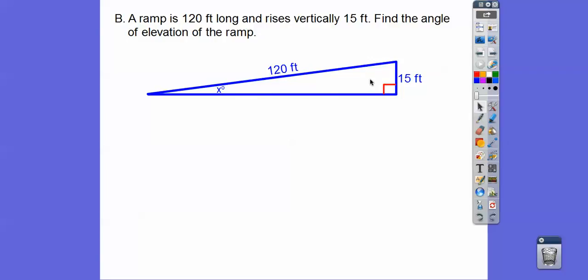So this is a sine ratio. So the sine of that, then get the decimal of that. And then here we got to do shift sine or second function sine. And so when you do that, we get about 7.2 degrees right there.